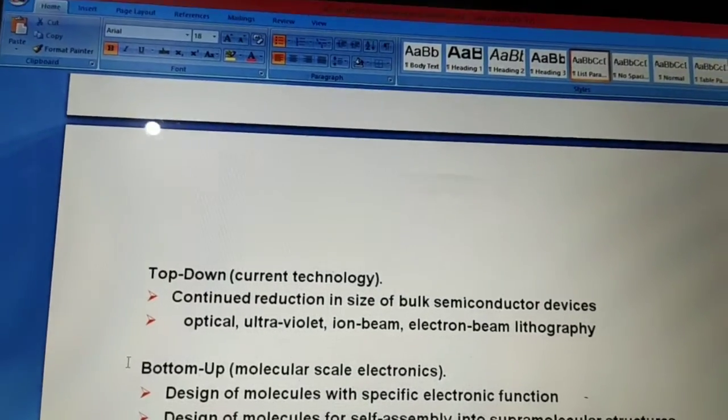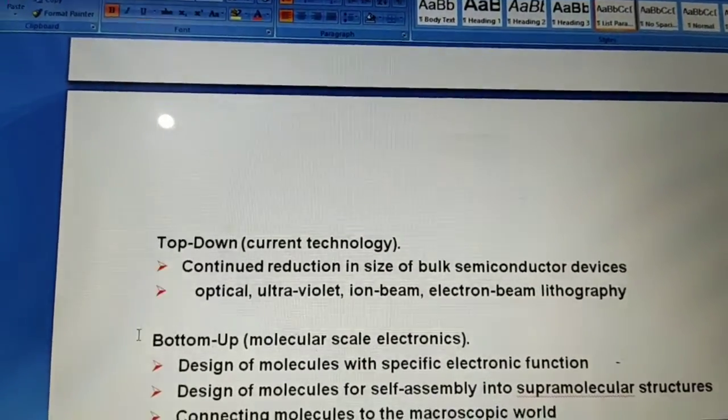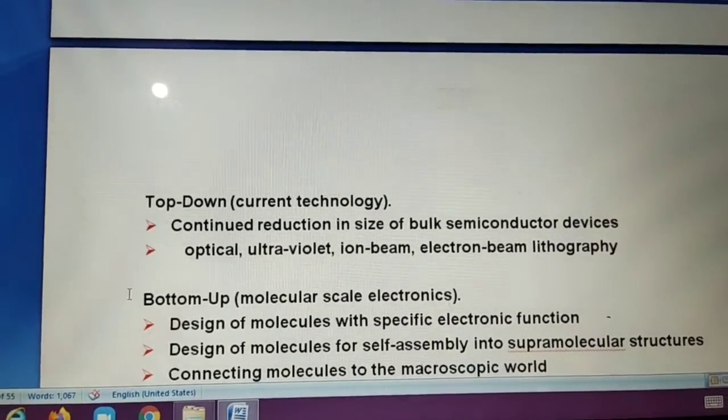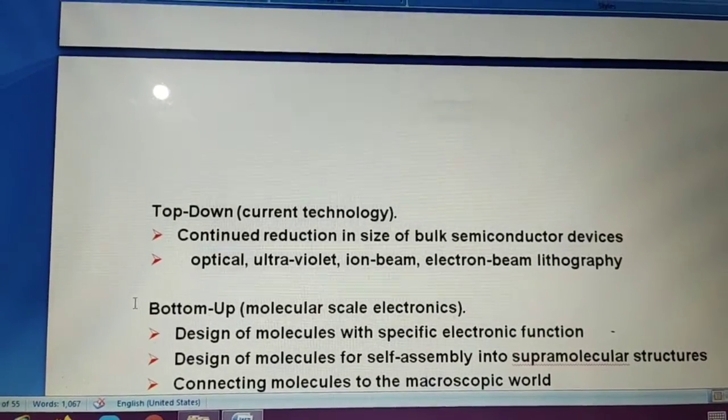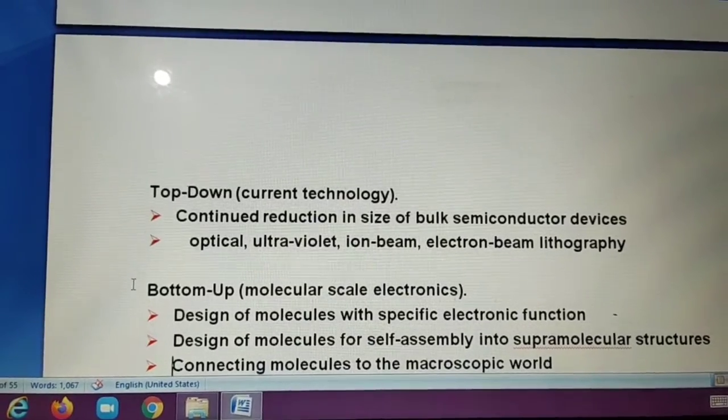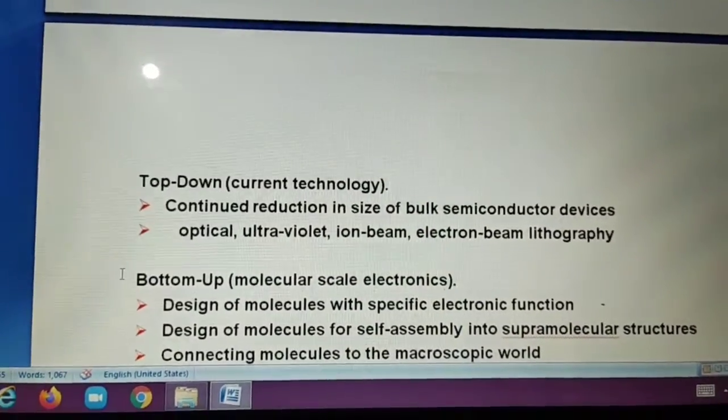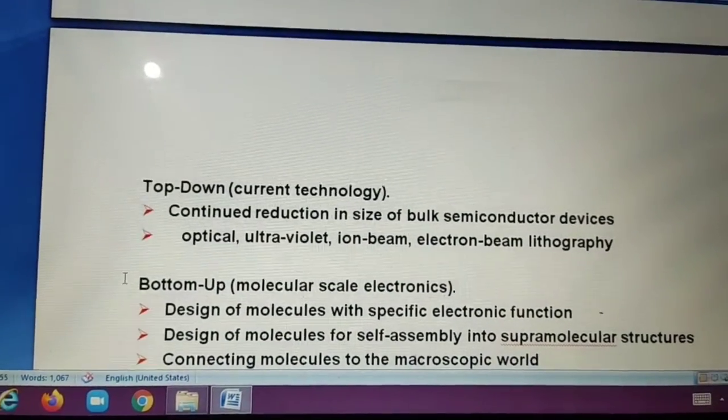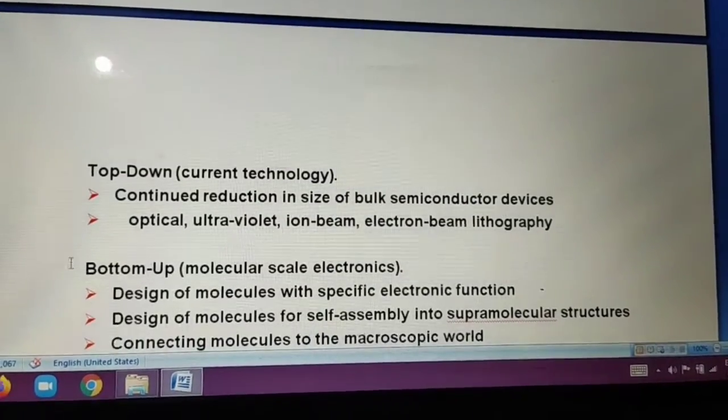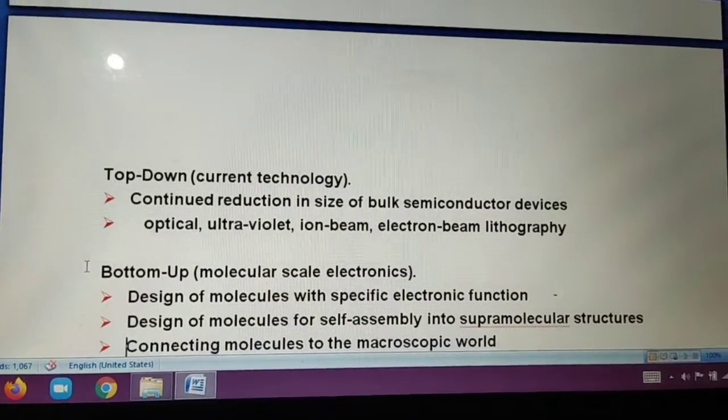Top down. Current technology. And bottom up. Molecular scale electronics. We discuss about top down. Top down is continued reduction in size of bulk semiconductor devices. Continued reduction in size of bulk semiconductor devices. Second is optical ultraviolet ion beam. Electron beam lithography.